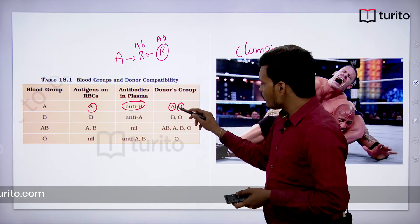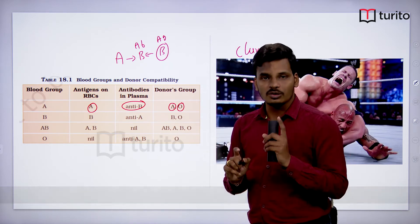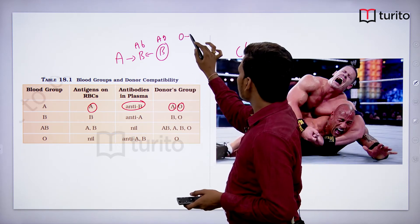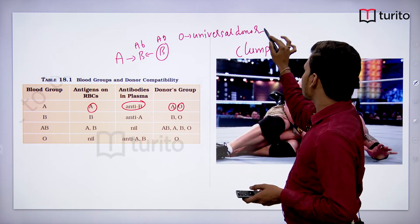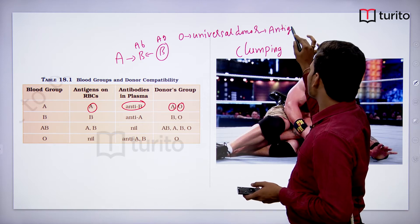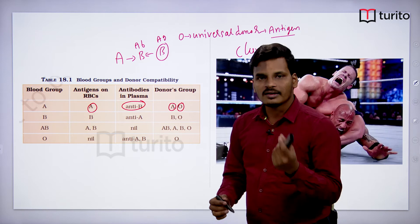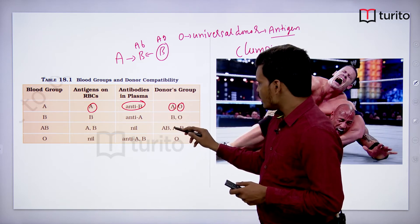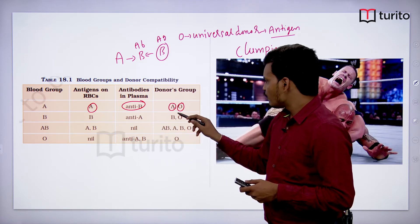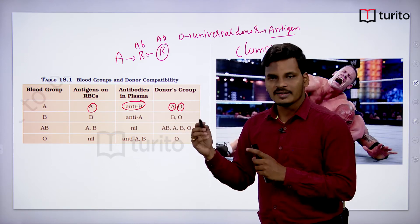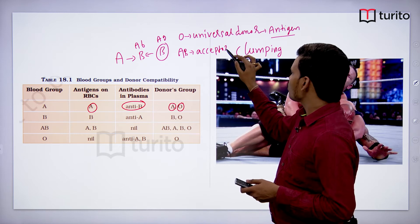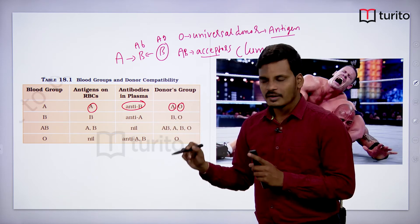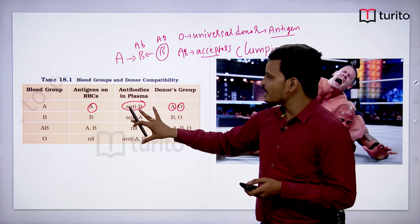O can donate blood to all other groups, hence O is known as the universal donor. O is the universal donor because antigens are completely absent, so there is no immune response in the recipient's body. AB can receive blood from all other blood groups, hence AB is known as the universal acceptor. AB is the universal acceptor because both antigens are present, meaning no antibodies are present against incoming blood.